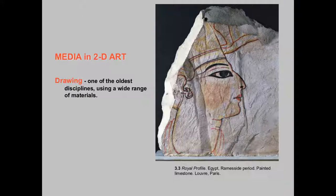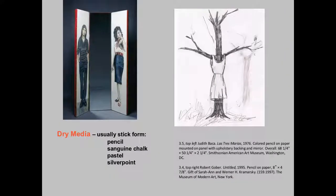Drawing is very old — one of the most basic acts we ever do as humans. Looking at a more recent piece from 1976, this is colored pencil on paper, if you can believe that. It looks like a painting, with a lot of detail and richness in color. It's all done with colored pencil on paper, attached to an upholstery backing, and it's flat with a mirror. This particular piece is pencil on paper — super simple. From 1995, people are still making drawings with pencil and paper.